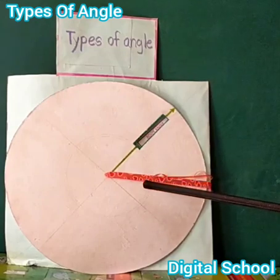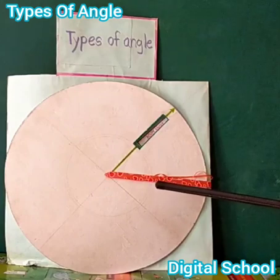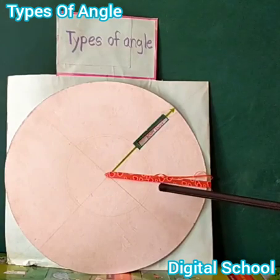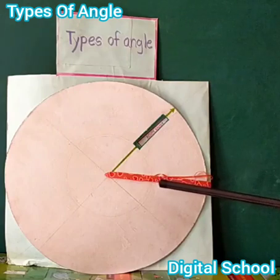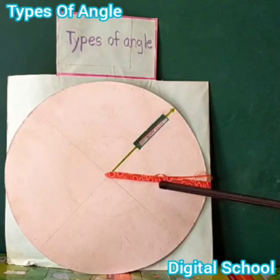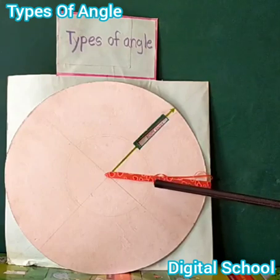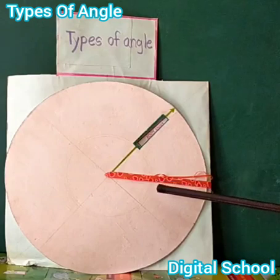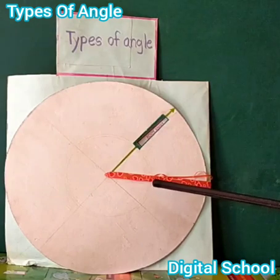Assalamu alaikum, I am Asuna. Today we will learn about types of angle. Dear friends, look at the board. This is an acute angle. The definition of acute angle: an angle which measures more than 0 degrees but less than 90 degrees is called an acute angle. In the figure, angle ABC is called an acute angle. Thank you.